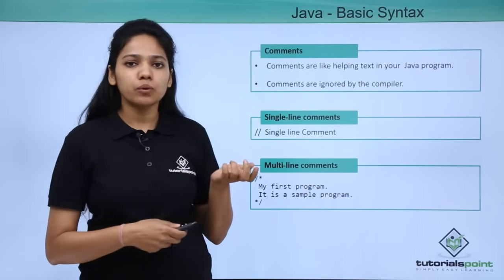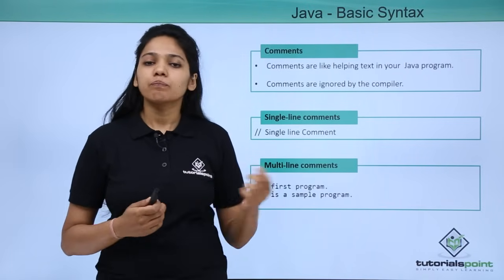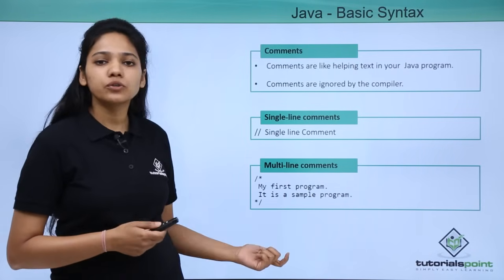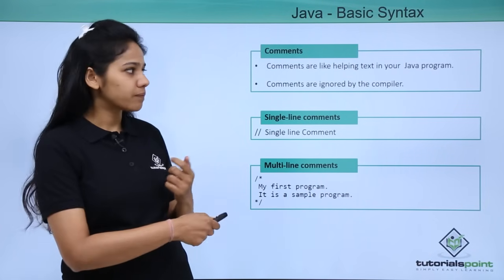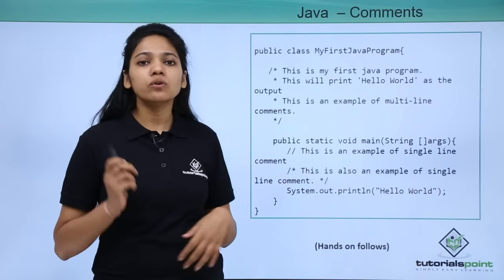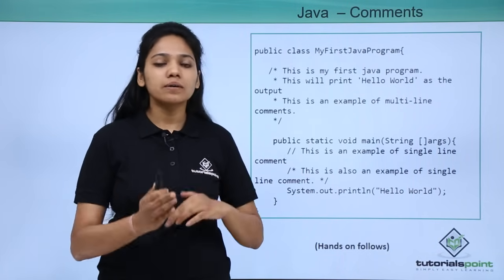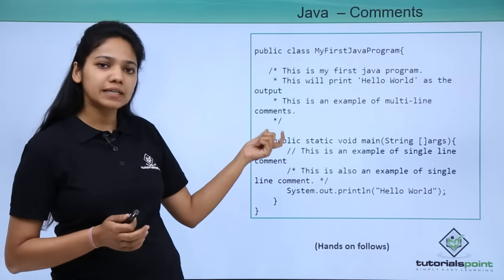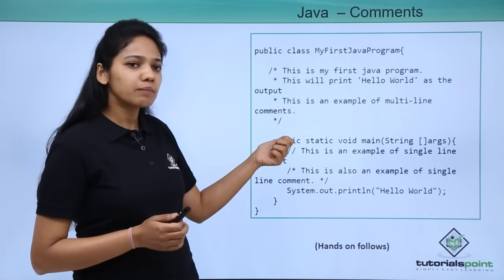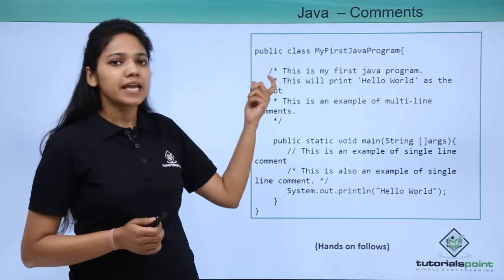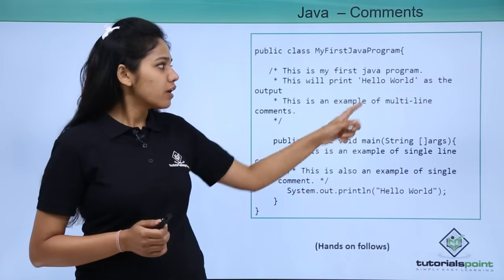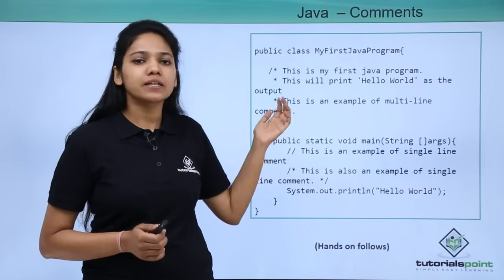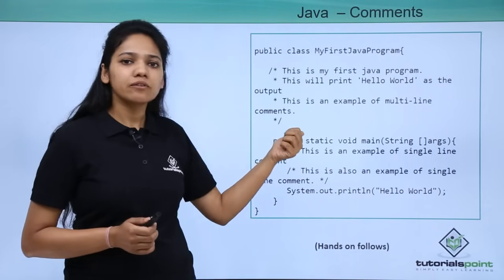How do you write single line comments? By providing two forward slashes, followed by the comment text. For multi-line comments, provide a forward slash followed by an asterisk. Remember that in the case of multi-line comments, once you open with a forward slash and asterisk, you need to also close with an asterisk and a forward slash.